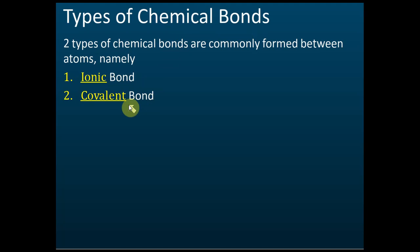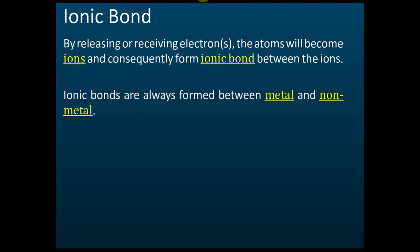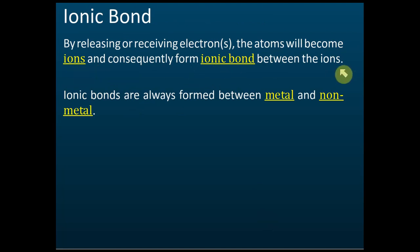Those are the two types of chemical bonds. Ionic bonds form when atoms release electrons. By releasing or receiving electrons, atoms become ions. If an atom throws away an electron, it becomes positive; if it receives an electron, it becomes negative. After they become ions, they form an ionic bond between the ions.